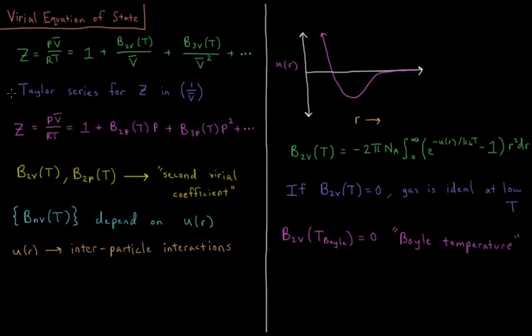So we know for an ideal gas, the compressibility factor is going to be one, and thus all these virial coefficients would be zero. So any non-zero value of these virial coefficients indicates some degree of the particles interacting with one another.